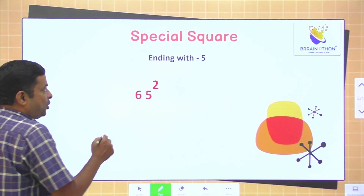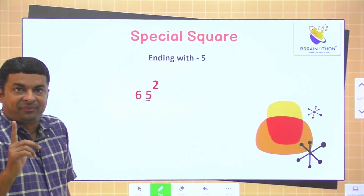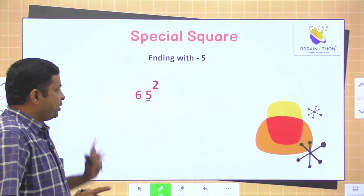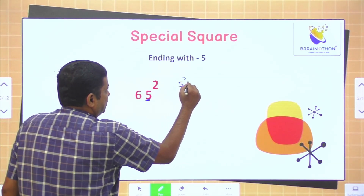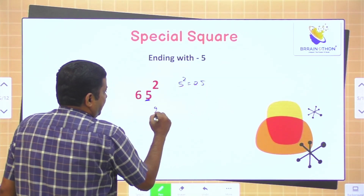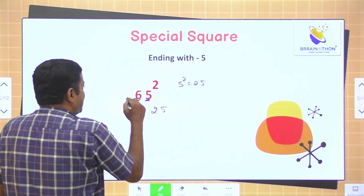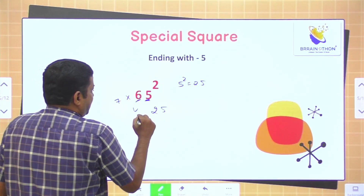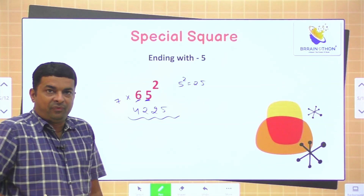Let's solve a few more sums. If your number ends at 5 and you want to find the square, you can do it very fast. First, 5 square is 25, so write 25. Now, multiply 6 with its next number, that is 7. 6 into 7 is 42. Our final answer is 4225.